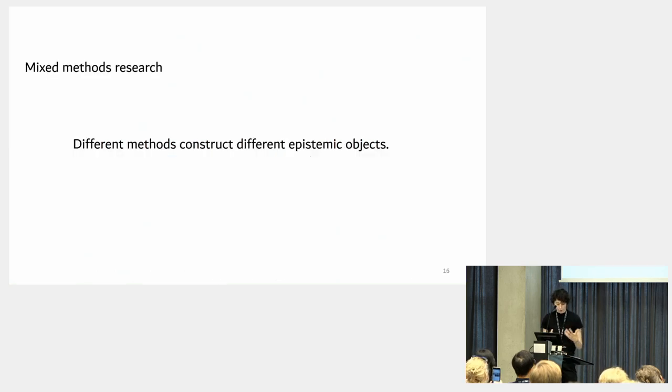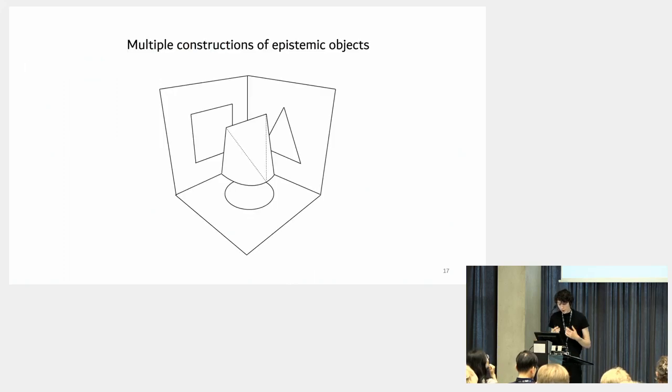But what is the underlying hypothesis here? So the underlying hypothesis here could be different methods construct different epistemic objects, which are, and that's the main thing of mixed methods, which are interconnected and refer to the respective other world. So one premise here is the duality of methods addresses the complexity of the research question or the object of investigation.